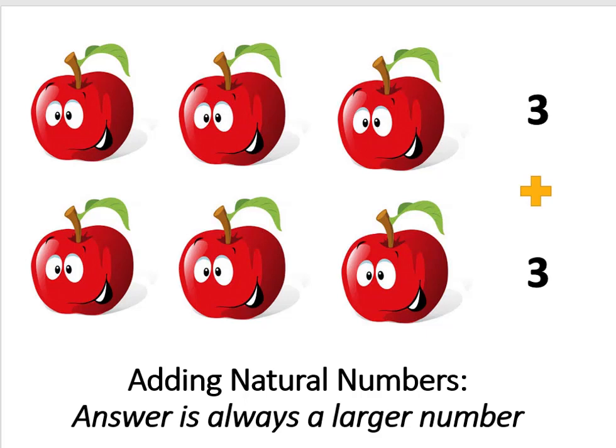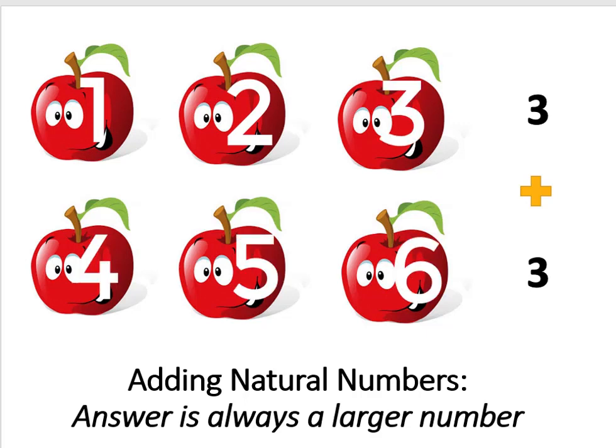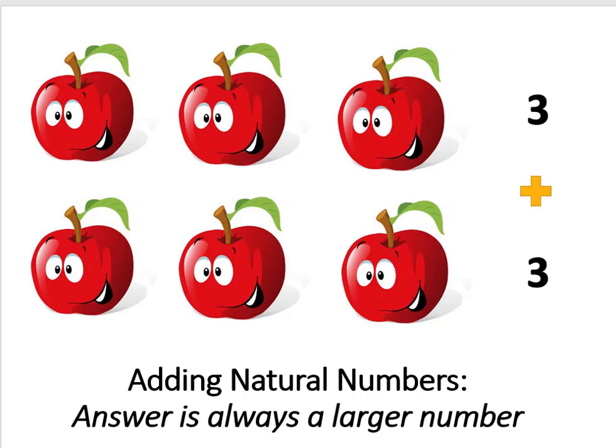If you added three apples and three apples and got an answer that was less than three, let's say two apples, you should instantly recognize that something has gone horribly wrong. That sense that you get, the sense of wrongness, is your number sense telling you that adding two natural numbers should always give you a larger answer.